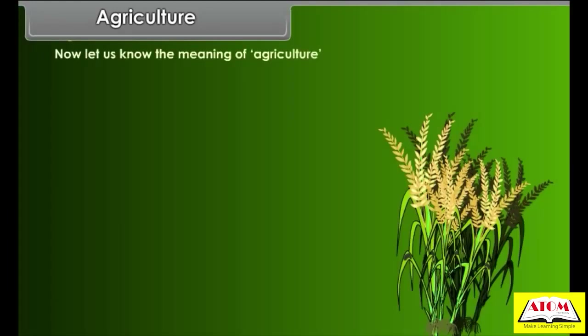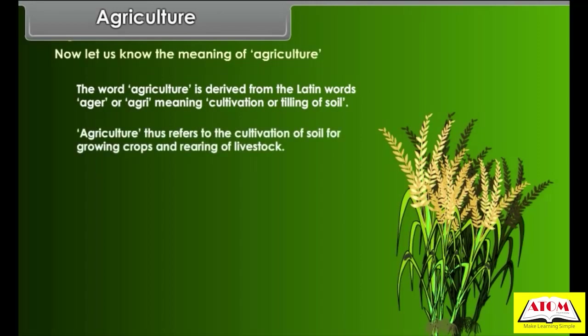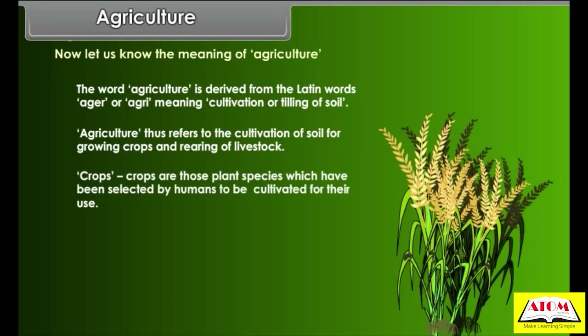The word agriculture is derived from the Latin words 'aga' or 'agri' meaning cultivation or tilling of soil. Agriculture thus refers to the cultivation of soil for growing crops and rearing of livestock. Crops are those plant species which have been selected by humans to be cultivated for their use — for example, wheat, rice, maize, etc.